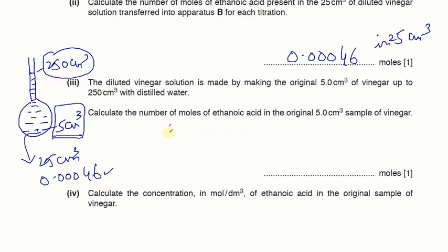If 25 cm³ contains these many moles, what about 250 cm³? So it will cross multiply to get the answer and that will be times 10. So it will make it 0.0046. Now these are the moles present in 250 cm³ and that will be same as present in 5 cm³ of the vinegar. That's it.